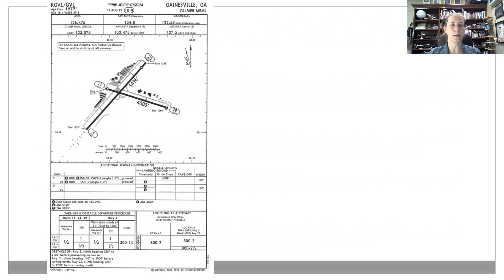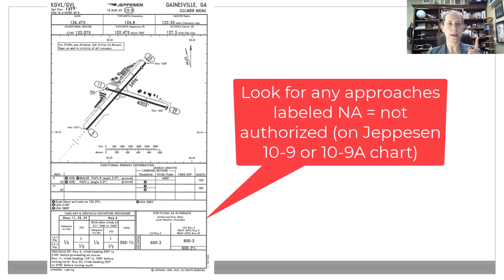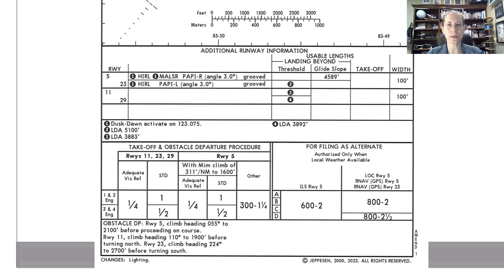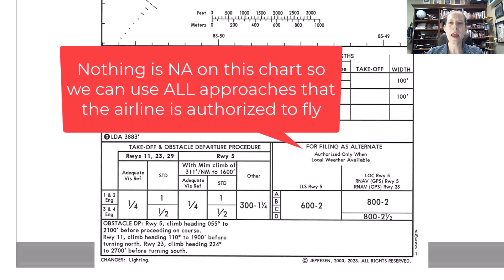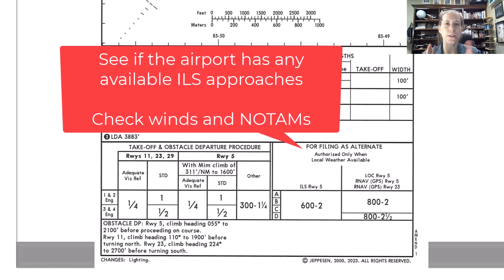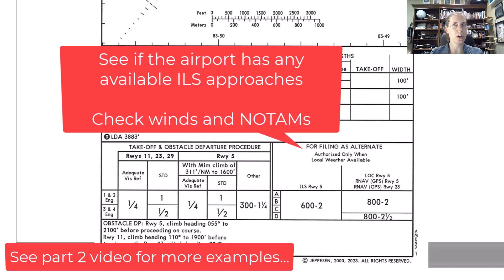Let's do the first example. I picked Gainesville, Georgia. Step number one, we are going to look at the 10-9 page for that airport. We're looking for any NA approaches. If I look at the bottom where it says for filing as alternate, there's nothing listed as NA — awesome. Next, I am going to look for ILS approaches that would work with the current winds. I also have to check NOTAMs, but I'll have another example later regarding NOTAMs.